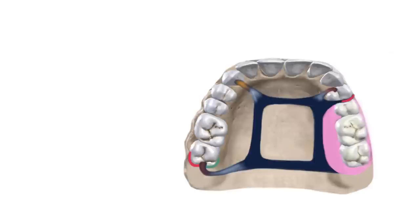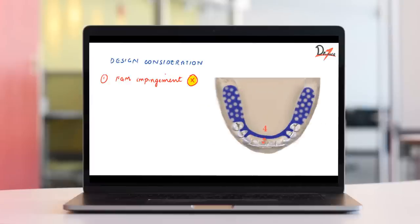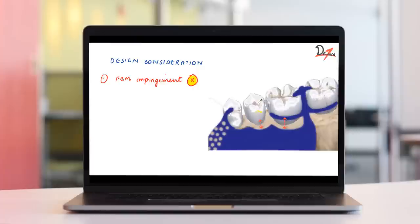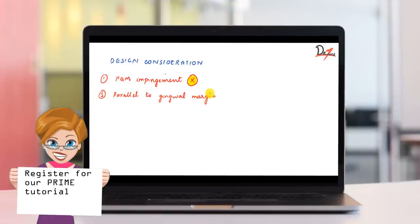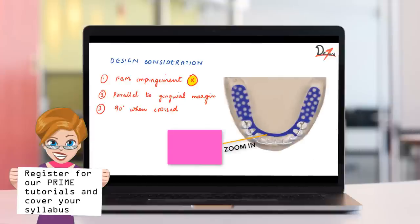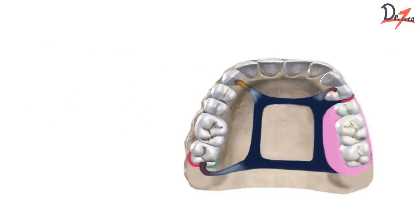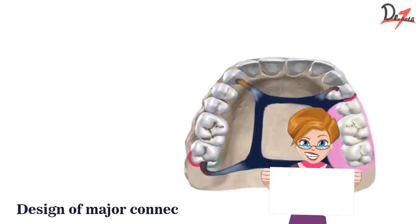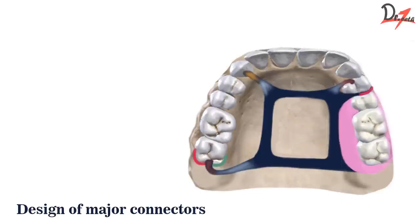Hello everyone, Assalamu Alaikum. In the last video, we studied some of the characteristics or requirements of the major connectors. In this video, we are going to cover the maxillary major connector — the advantages, disadvantages, and in what type of cases each one of them is used. Before we proceed, let me quickly rewind the requirements of the major connector, because this will determine the design and hence the various types of connectors.